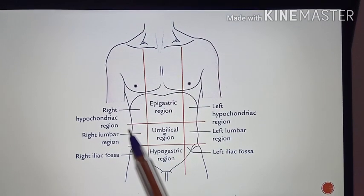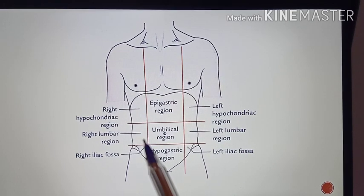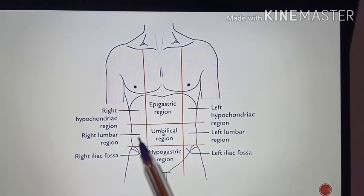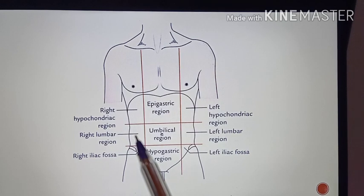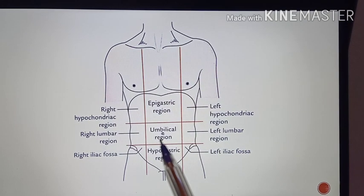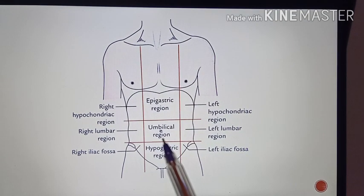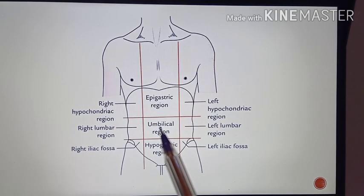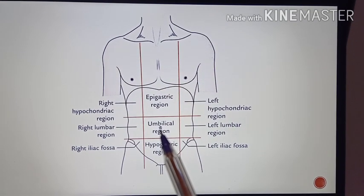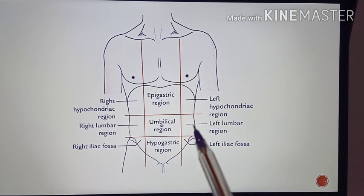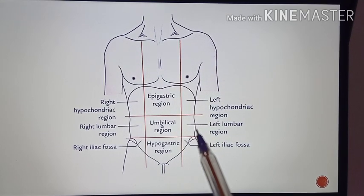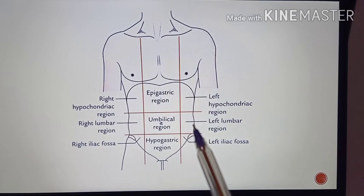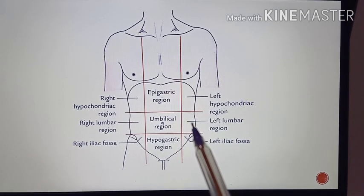Coming to the right lumbar region, it contains the right kidney, right ureter, and ascending colon. The umbilical region contains loops of small intestine and the inferior vena cava. The left lumbar region contains the left kidney, left ureter, and the descending colon.